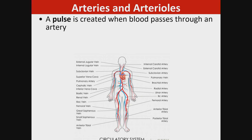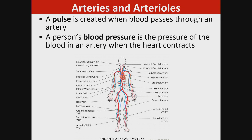A pulse is created when blood passes through an artery. A person's blood pressure is the pressure of the blood in an artery when the heart contracts.